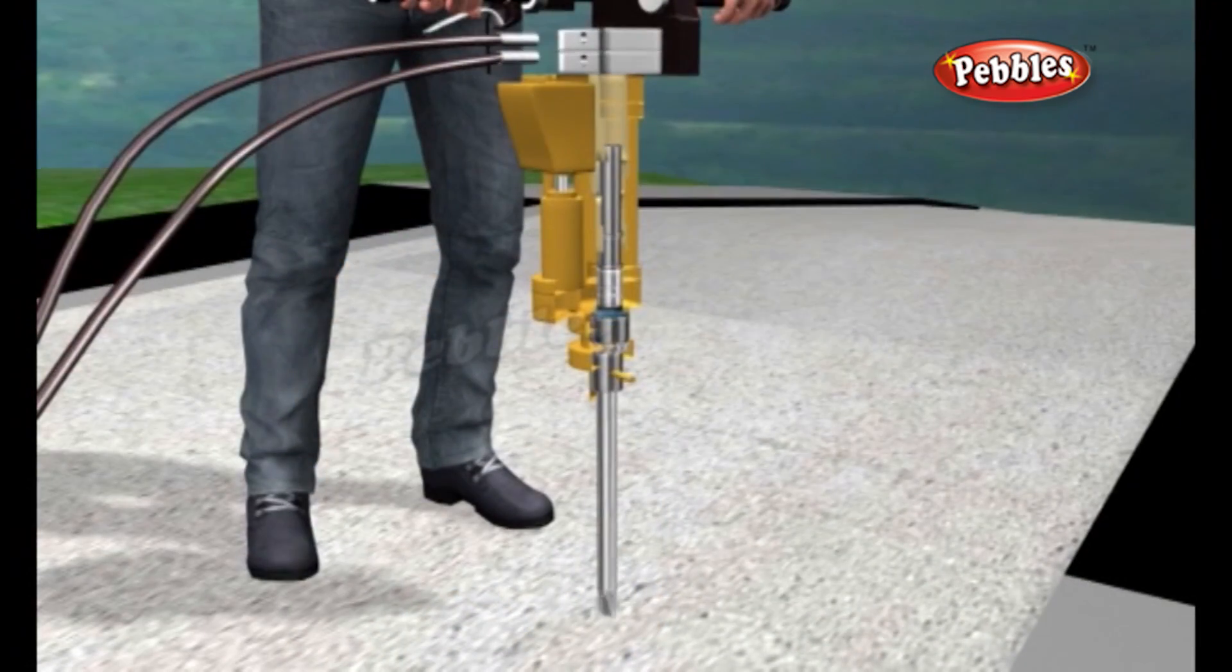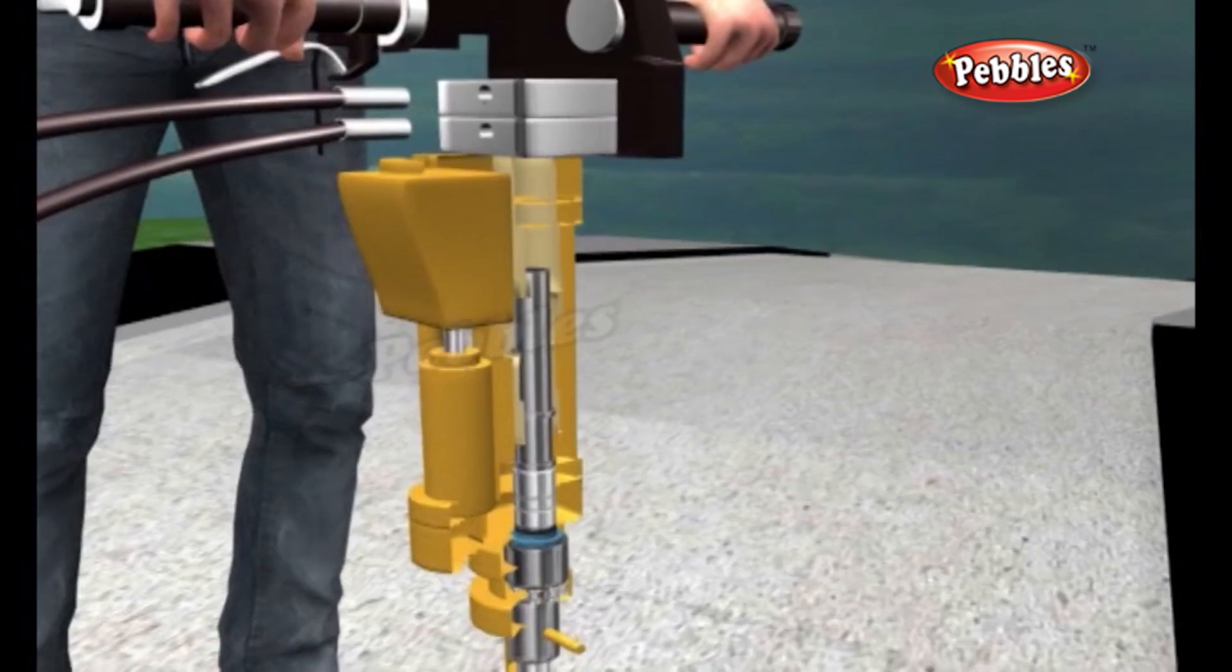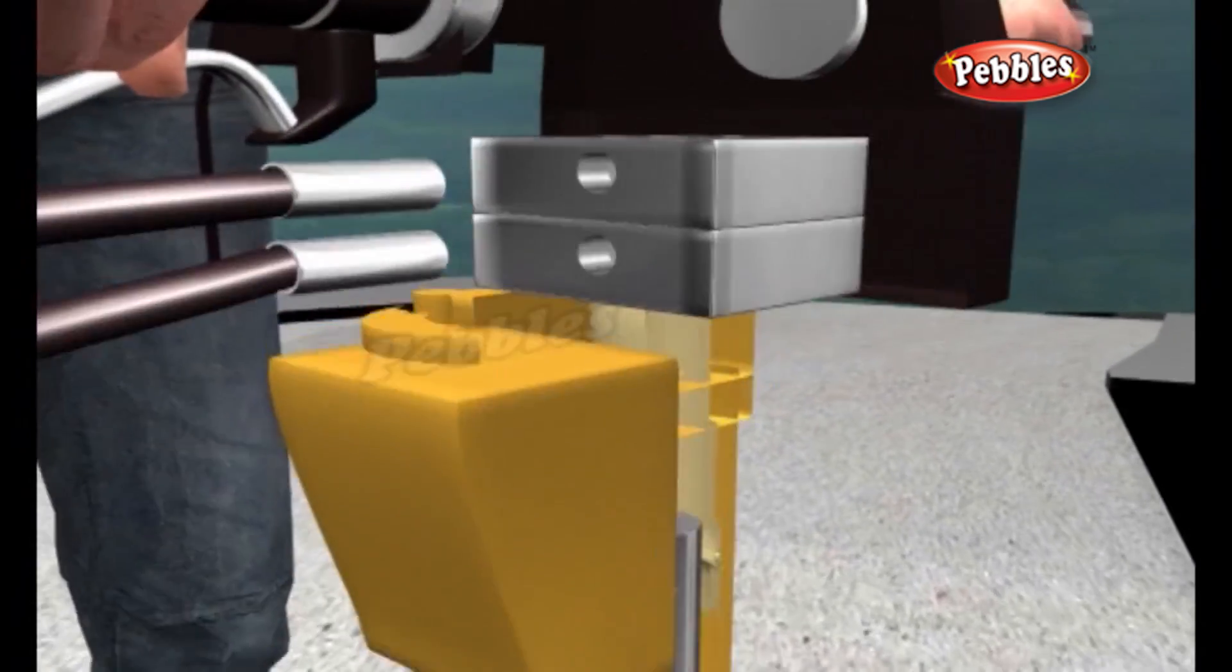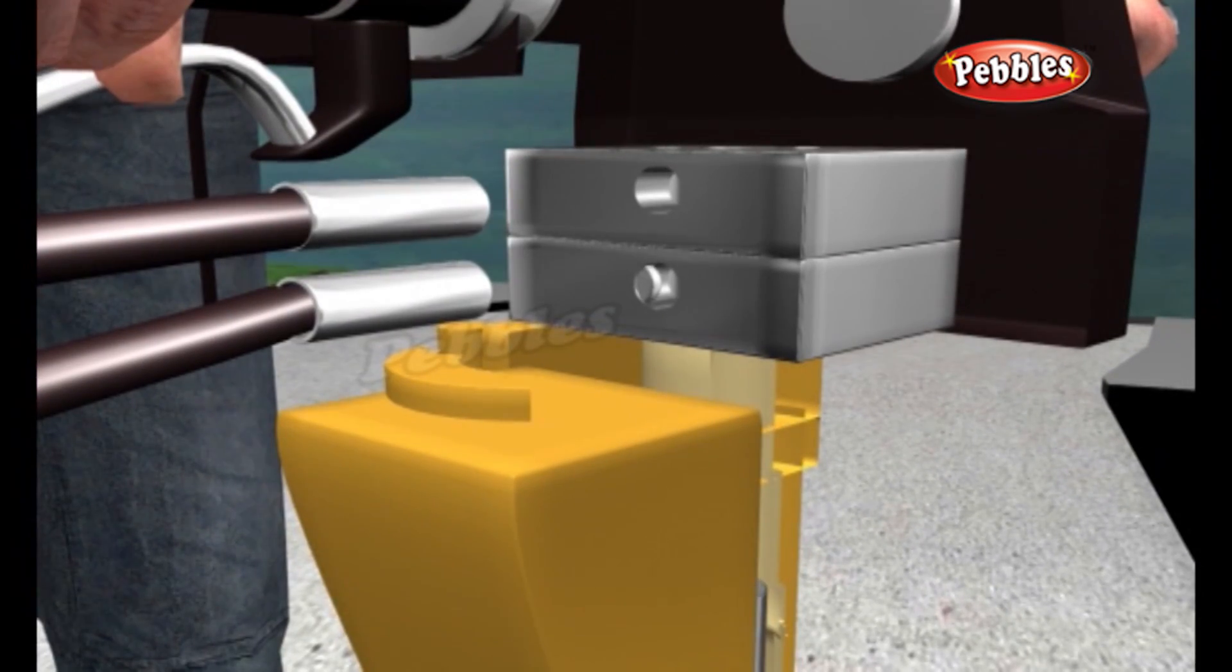When the worker presses down on the handle, air pumps from the compressor into the jackhammer through a valve on one side. Inside the hammer, there's a circuit of air tubes, a heavy pile driver, and a drill bit at the bottom.